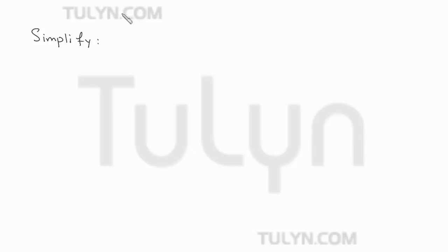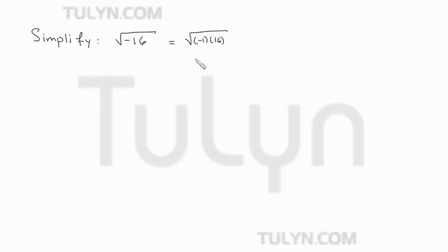Simplify the following radical expression: the square root of negative 16. You can split this up, since the square root of negative 16 is the same thing as the square root of negative 1 times 16. Splitting up the square roots, you have square root of negative 1 times square root of 16.